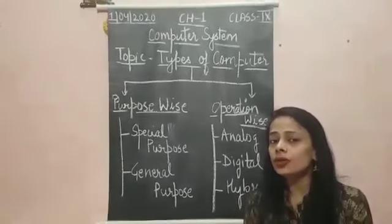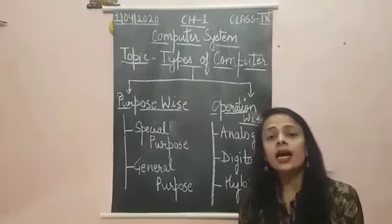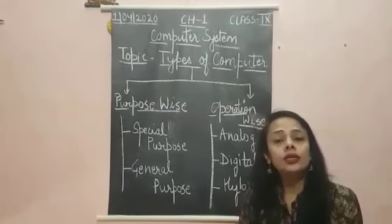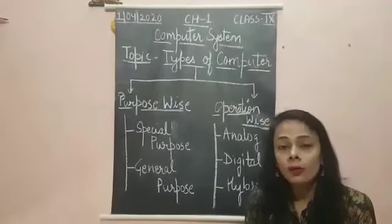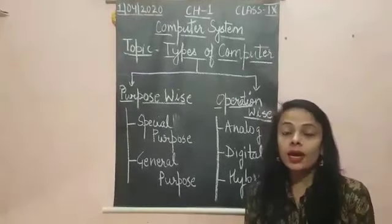Now what is discontinuous data? Discontinuous data is that which are converted into binary form. Binary form means the digits 0 and 1.